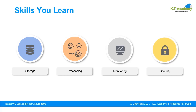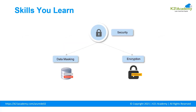Security is a very important factor for the cloud. We have data masking and data encryption. With data masking, we change the data coming from the source to analyze it, then decrypt it to consume. With encryption, we encrypt data using a cipher and reverse the cipher to decrypt. Azure also supports role-based access control, shared access signatures, and many other security features.